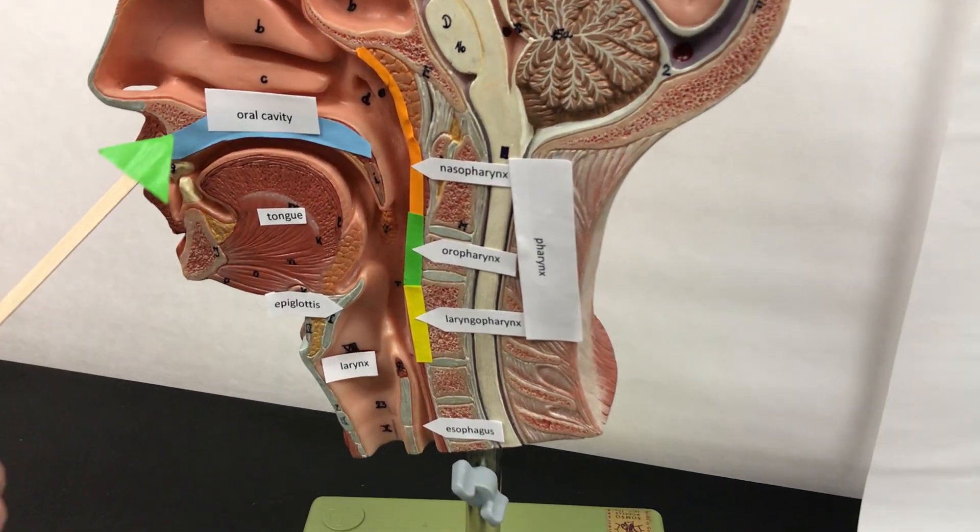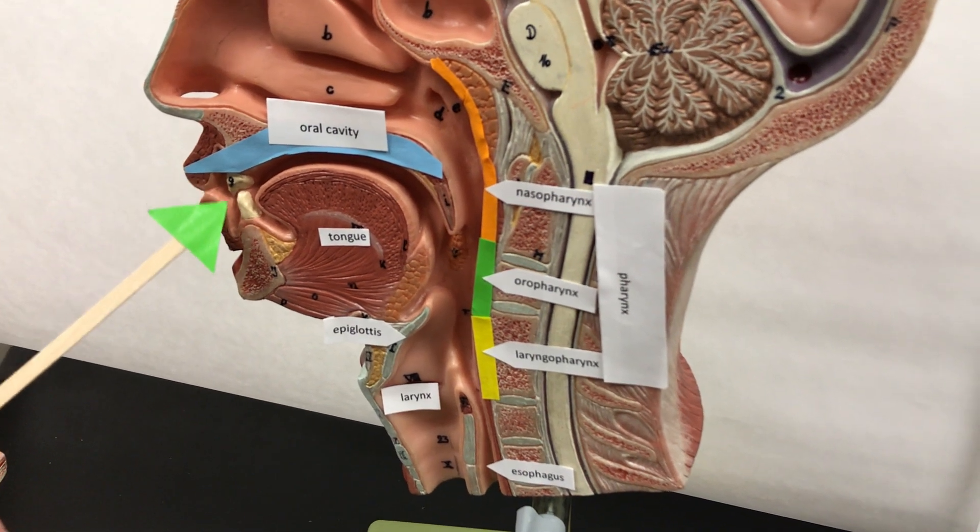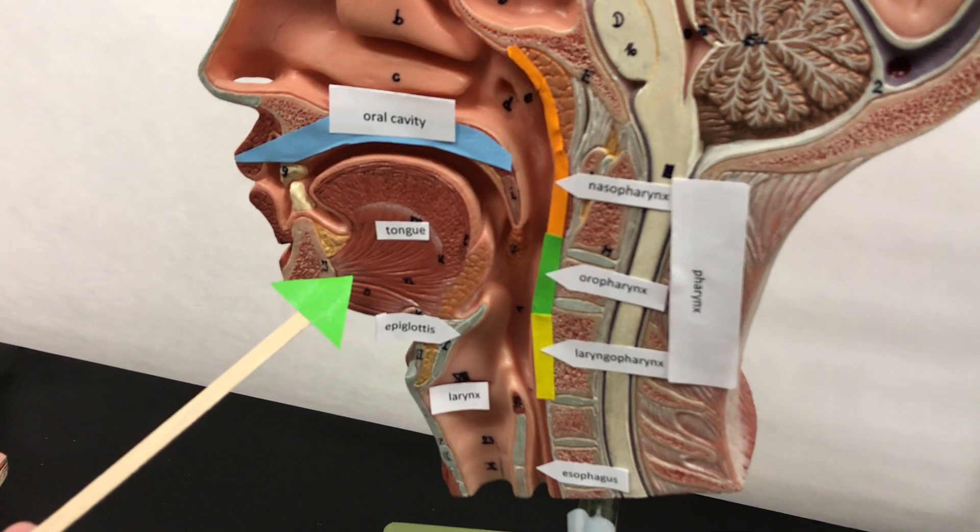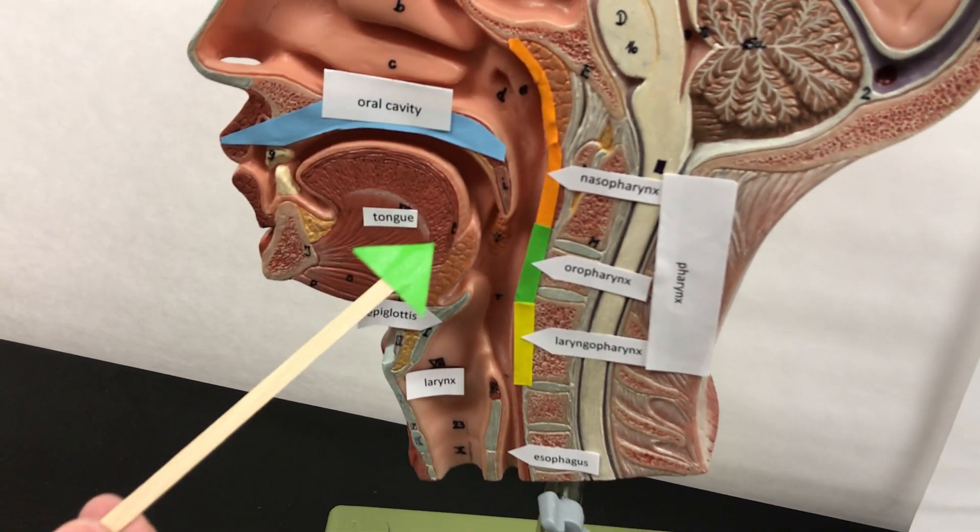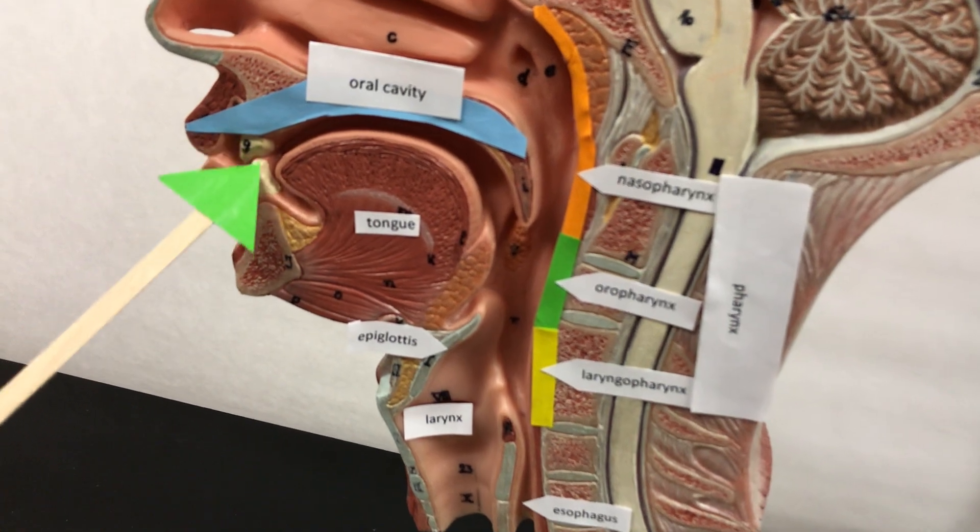So the oral cavity starts at the lips. It has the lips, the teeth, and then the tongue. The tongue is mostly skeletal muscle and it helps form a bolus of the masticated food that you ripped up with the teeth.